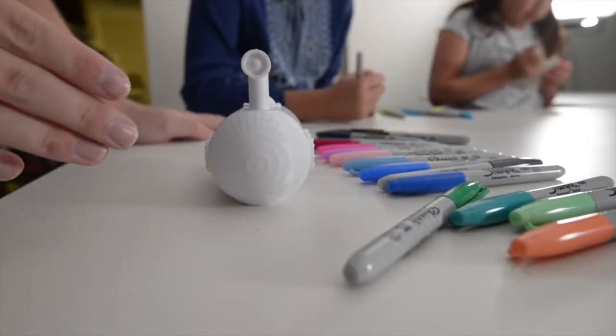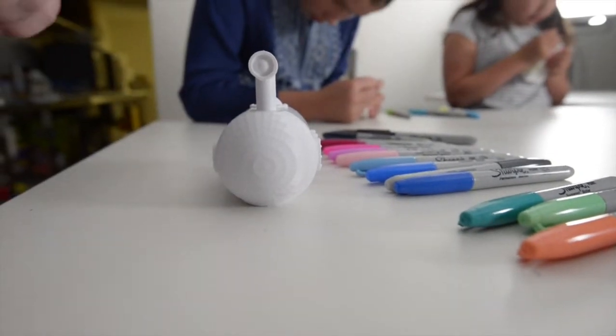So to begin painting my submarine I'm going to use a green Sharpie and I'm going to start painting in the periscope.